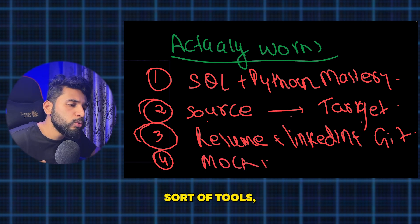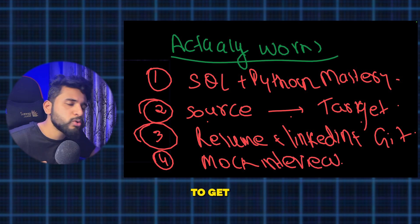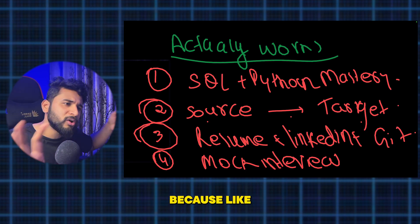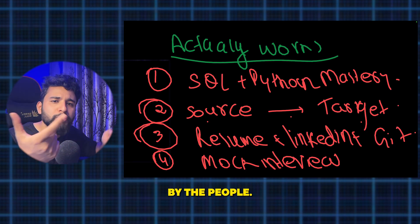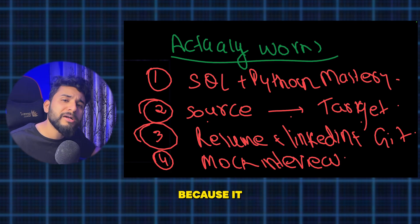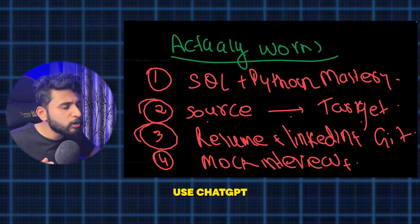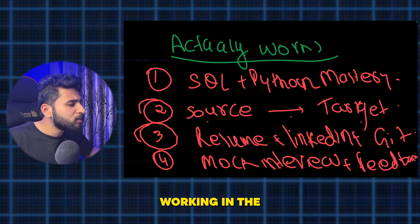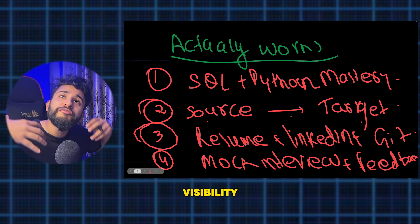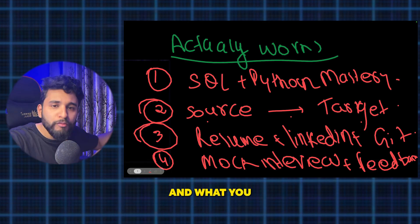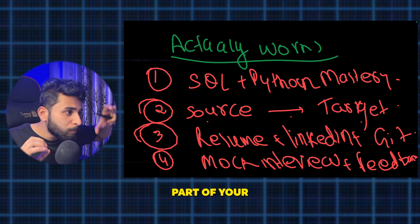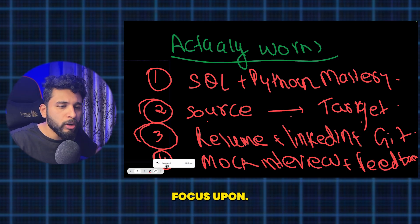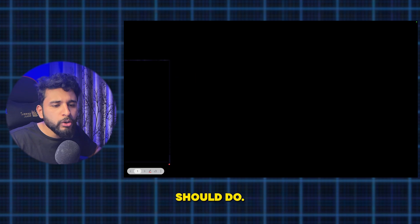Fourth: mock interviews and feedback. Use different tools — platforms like Topmate where you can get mock interviews from working professionals. You can also use ChatGPT for feedback. Try to get evaluated by people who are actually working in the industry so you have clear visibility on what you need to improve, where you're lagging, and which part of your skill set needs more focus.